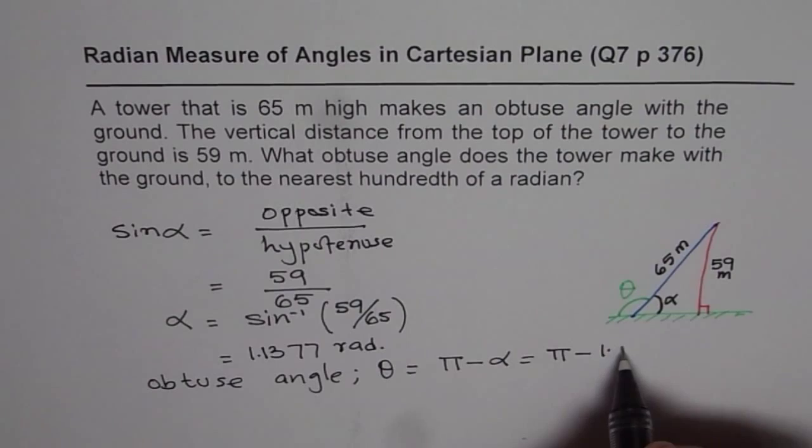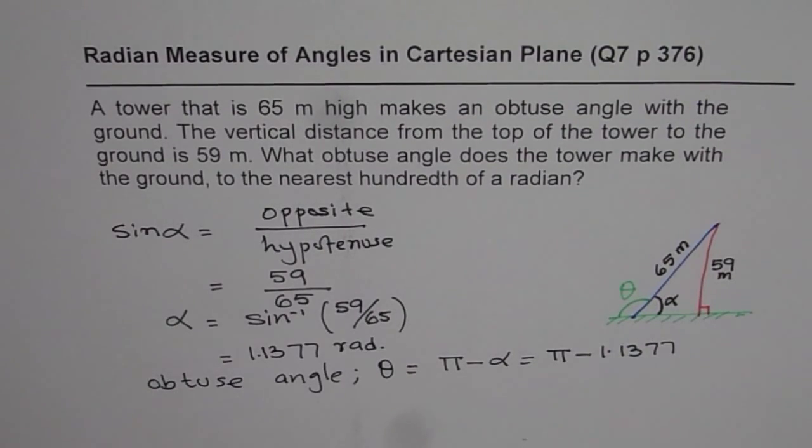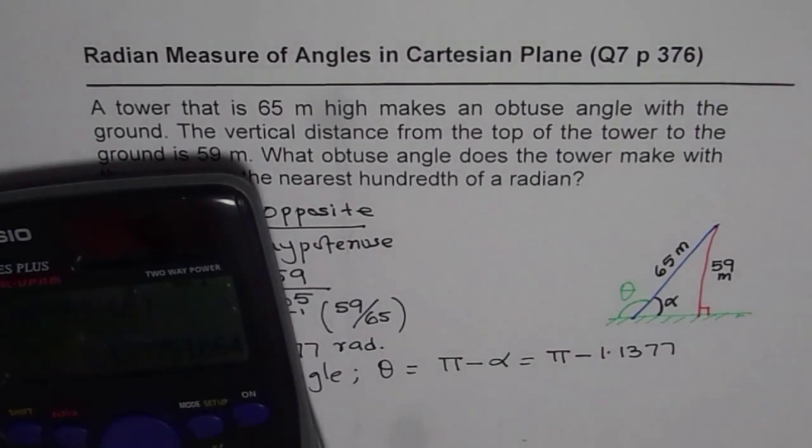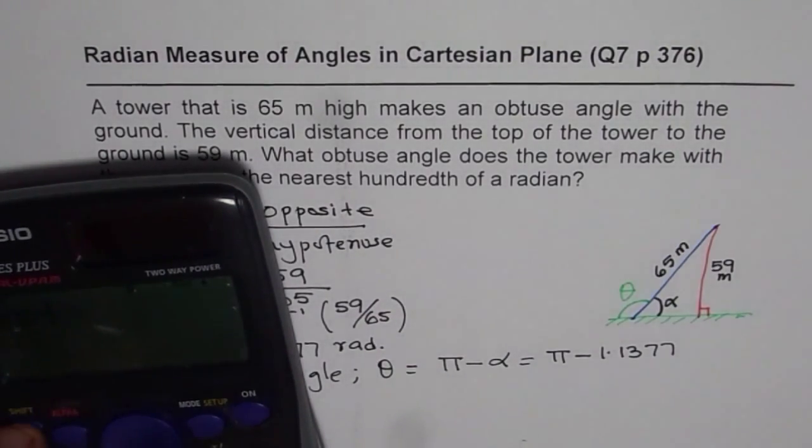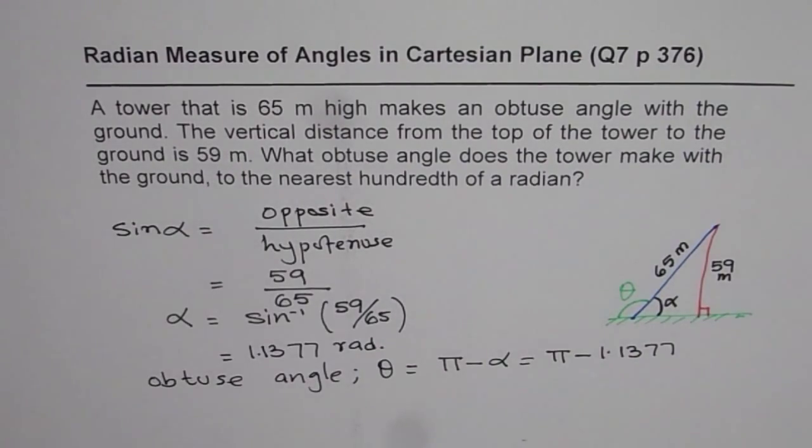So it depends on the accuracy of your calculator. Then you can round that answer to two decimal places right. So we will do take away, pi from here, which gives us 2.0038.